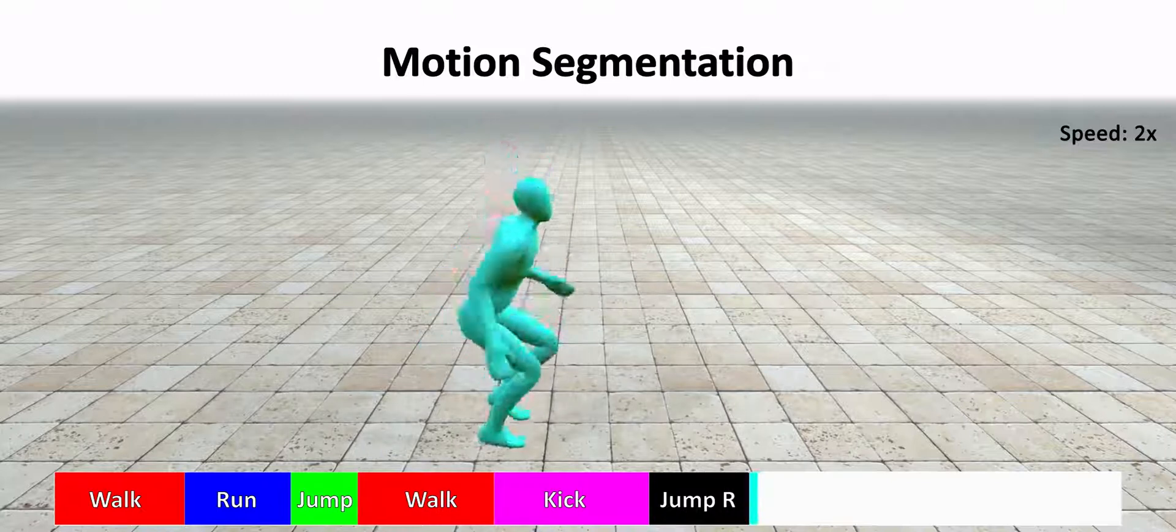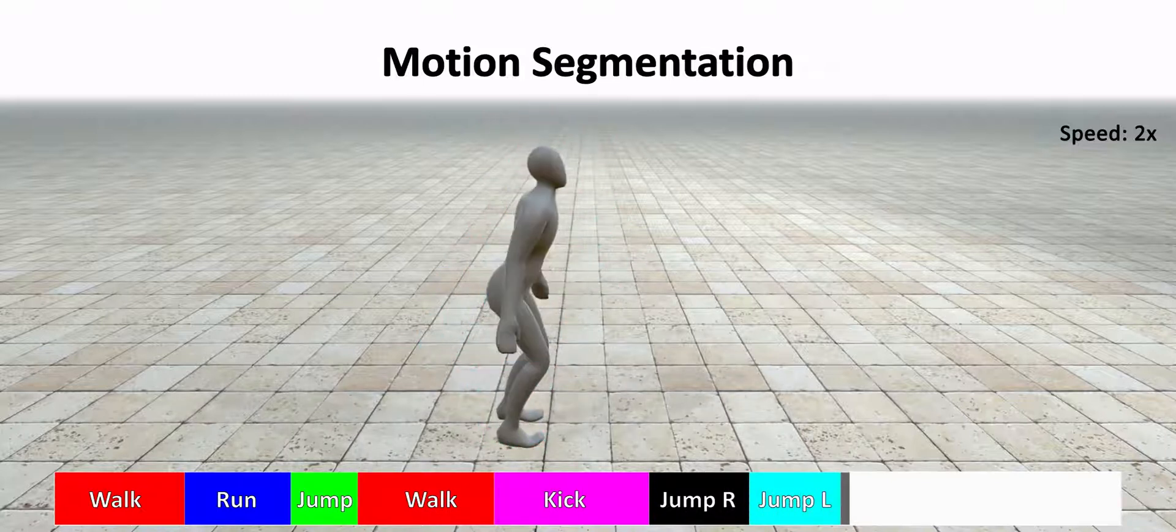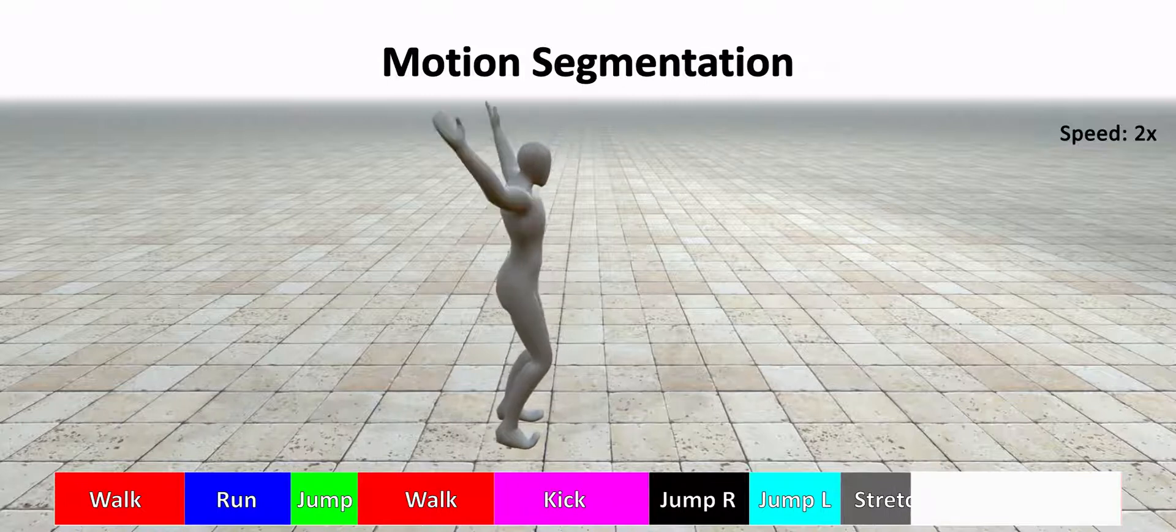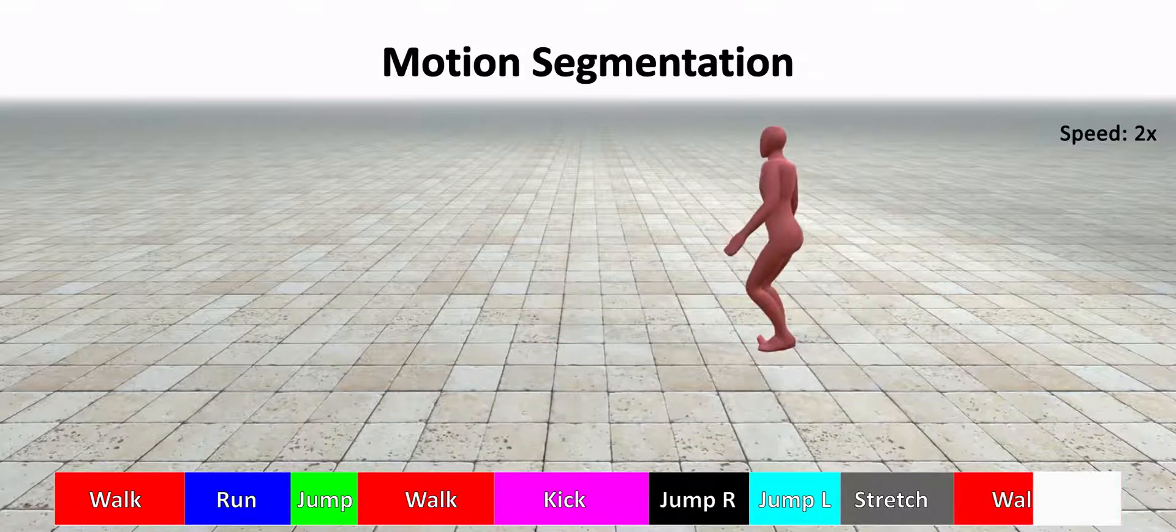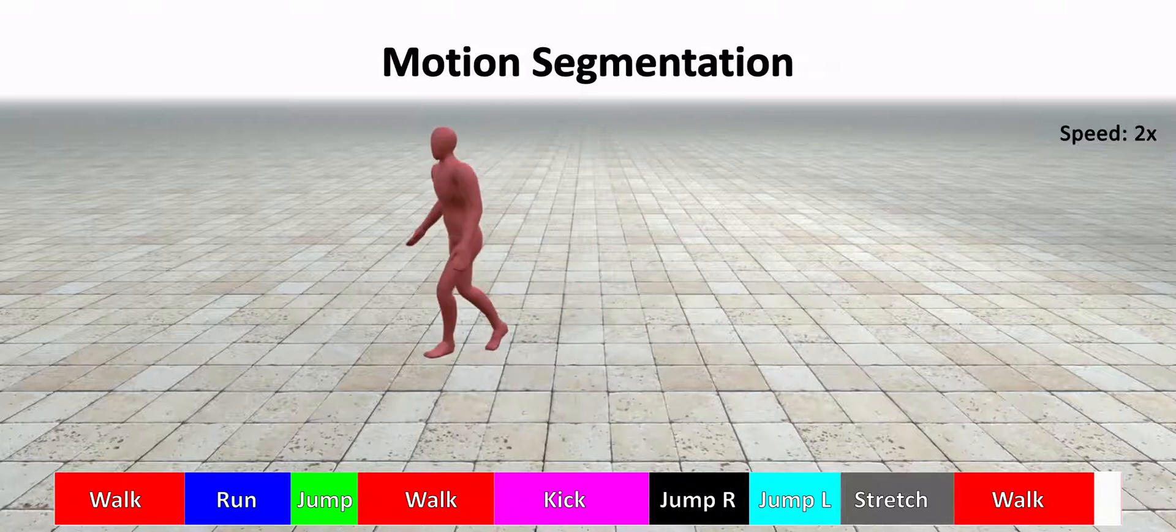In this example, a motion stream is temporally segmented into parts that belong to seven different actions based on predefined signatures, where each one is illustrated using a different color.